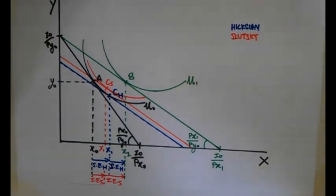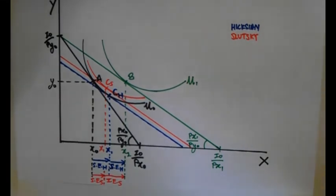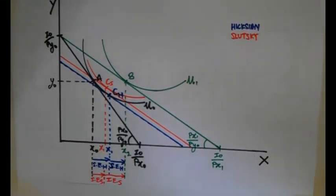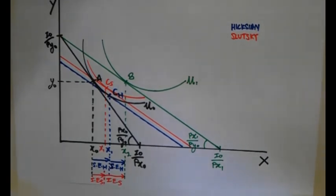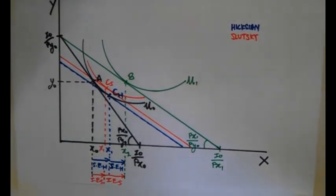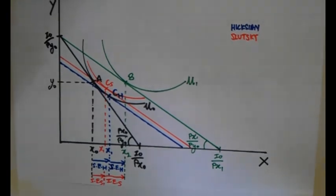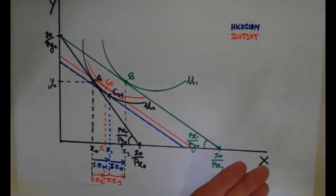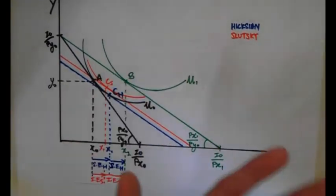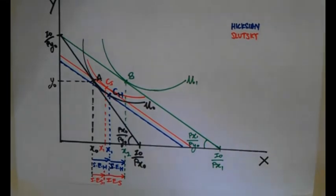It's really a mouthful saying all these words, but I hope that you can understand this. In the next video, we will be talking about how to identify whether good X is a normal, inferior, or Giffen good, and whether X and Y are complements or substitutes. Keep a look out for the next video, and I hope you've enjoyed this.